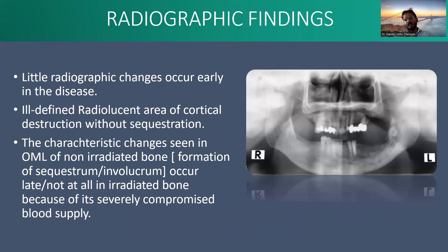Regarding radiographic findings, initially there won't be much radiographic change. In later stages you can see areas of decreased radiodensity and areas of cortical destruction without sequestration. You can see this in the radiograph on the left-hand side.